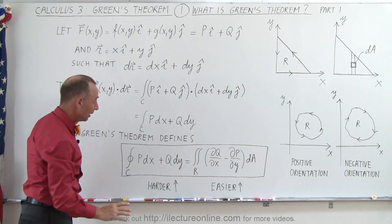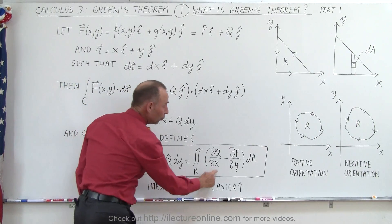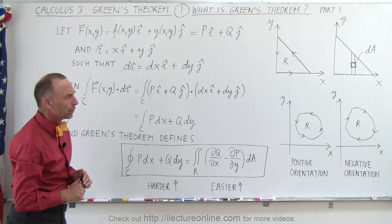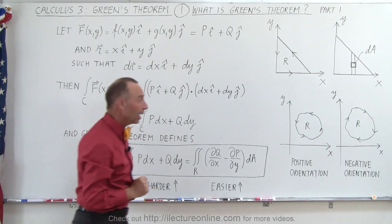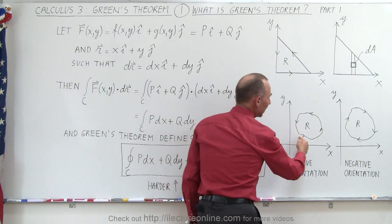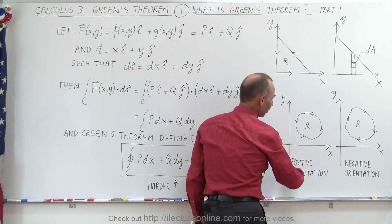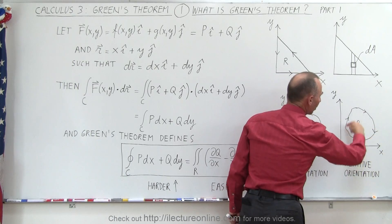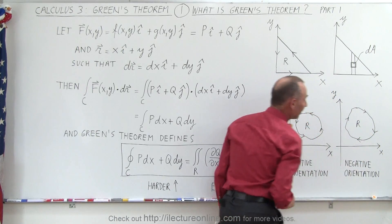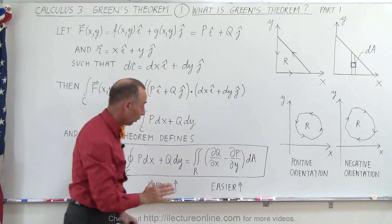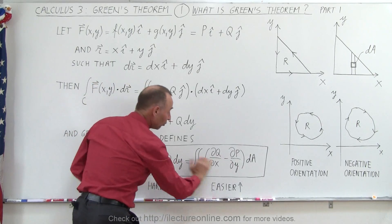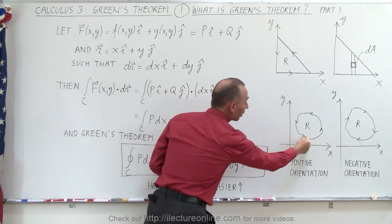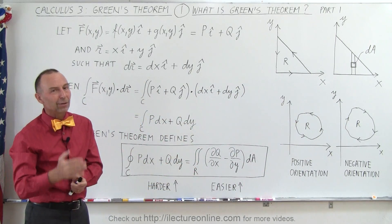Quite often it is much easier to integrate over the area of the region than to do the line integral directly, and we'll see plenty of examples of that. One more thing: if you integrate in a counterclockwise direction, that's considered a positive orientation. If you integrate in a clockwise direction, that's a negative orientation. In order for the line integral to equal the double integral according to Green's Theorem, we must integrate counterclockwise. Otherwise you'll be off by a sign.